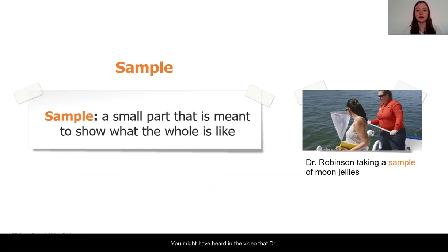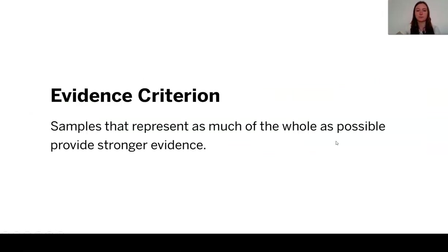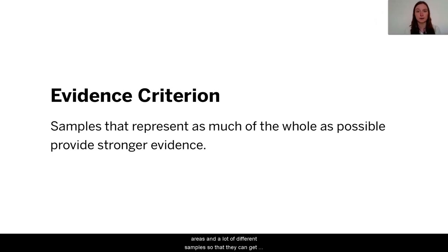You might have heard in the video that Dr. Robinson takes something called a sample of moon jellies. What a sample is, is a small part that is meant to show what the whole is like. You might have noticed that she used a net to gather her samples. Evidence is strong when the samples that they take represent as much of the whole as possible. When population ecologists are studying populations, they take samples in a lot of different areas so that they can get as clear a picture as possible.